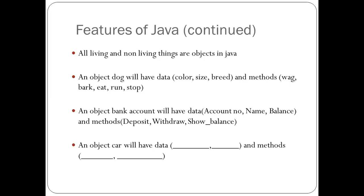As an exercise, consider what data and methods the object 'car' will have. You can mention what data and methods it would have — this assignment is left for you to solve.